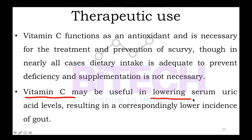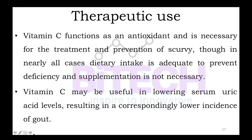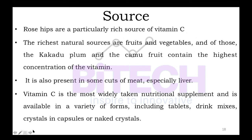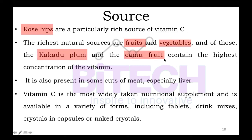Vitamin C may be useful in lowering serum uric acid levels. Common food sources of Vitamin C include citrus fruits, plums, rosehips, and a few others. Cuts of meats, especially liver, also contain Vitamin C.